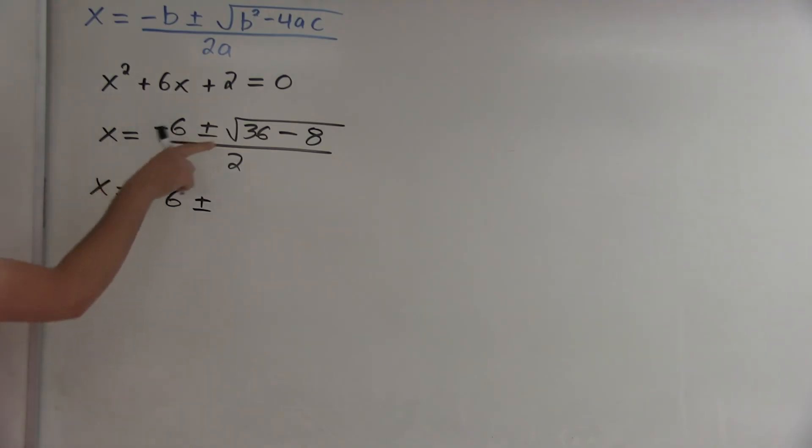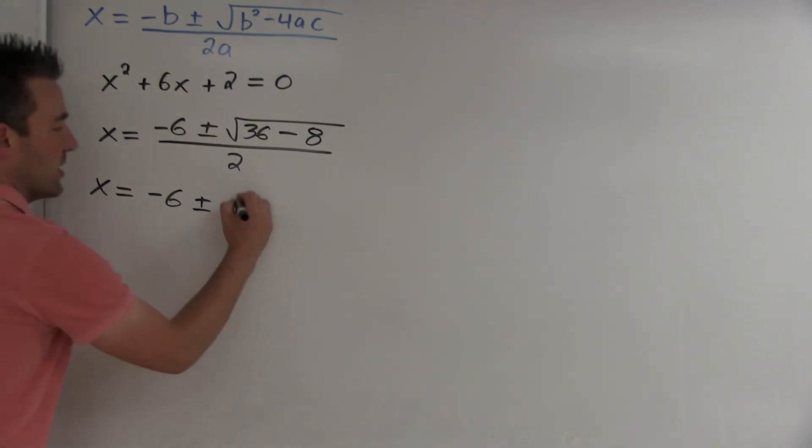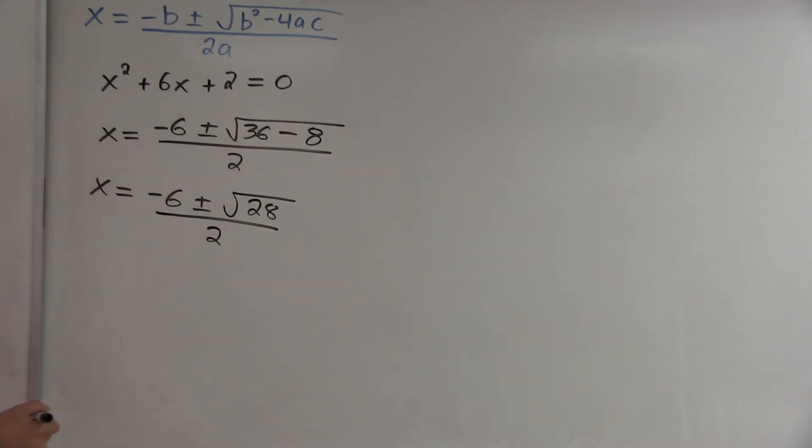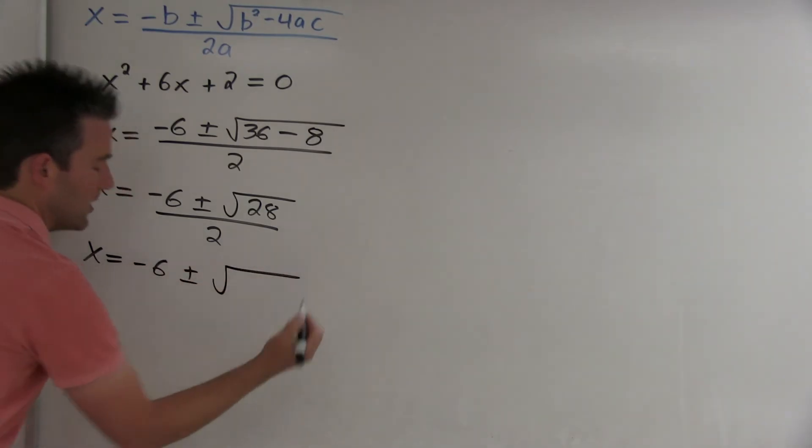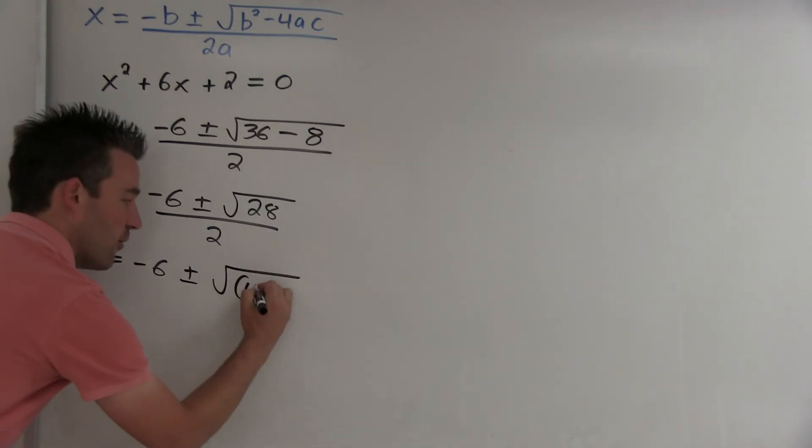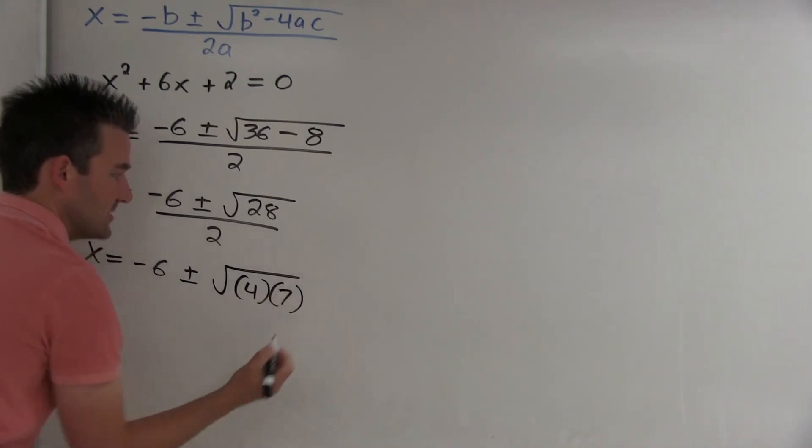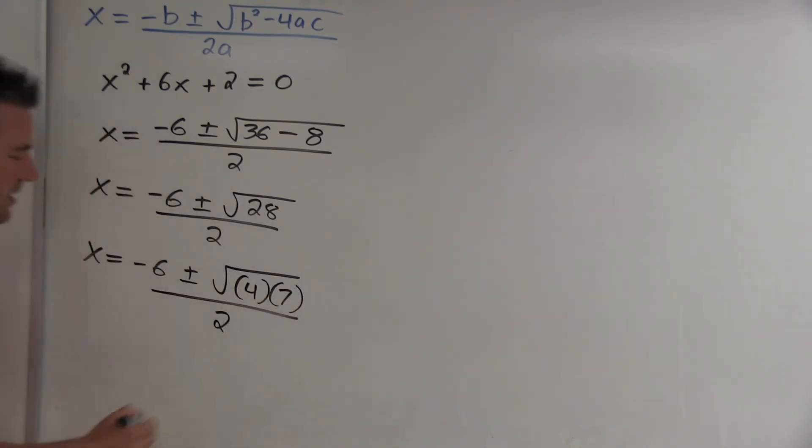When we simplify what's under the square root, we get 28. It's 4 times 7. We could rewrite 28 as 4 times 7. Since 4 is a perfect square, we can bring it outside the radical sign, and we get a 2.